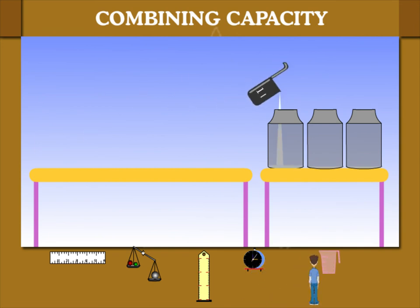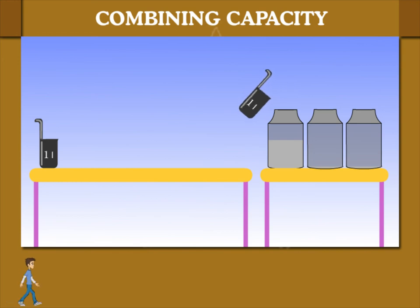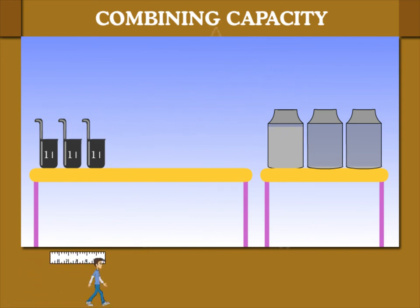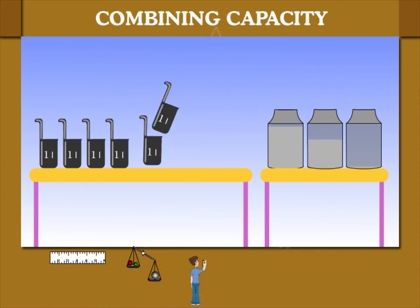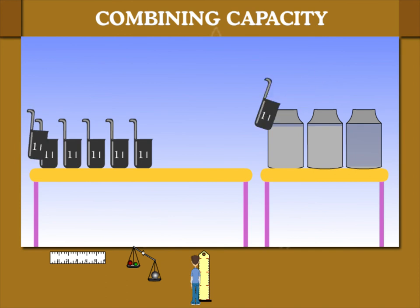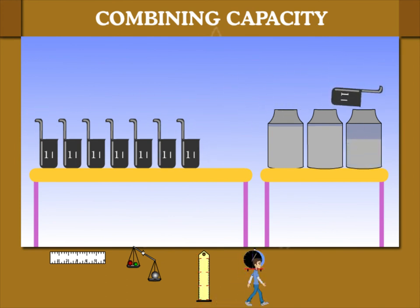Now there are 3 cans of 3 litres. They get filled by 1 litre measure. So 1, 2, and 3 litres fill up 1 can. Then 4, 5, 6 make up the second can. And 7, 8, 9 make up the third can.